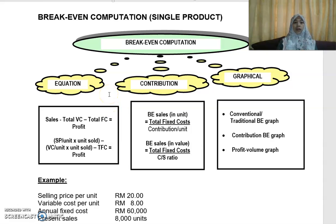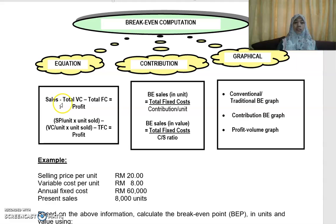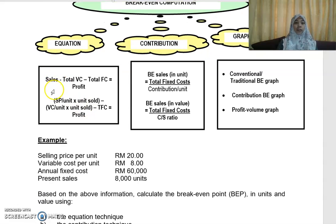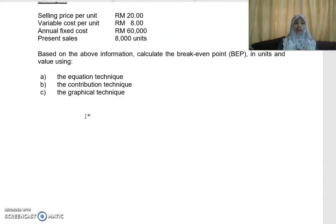For the equation technique, you are looking at total sales less your total variable cost less your total fixed cost, which gives you your profit. This is the equation we are going to use to compute our break-even point. Your total sales is your selling price per unit times units sold, minus variable cost per unit times units sold, minus total fixed cost, giving you your profit.